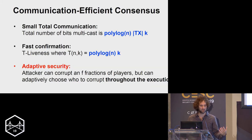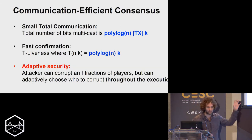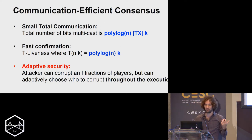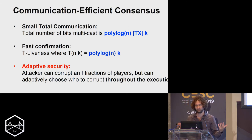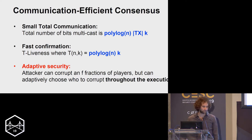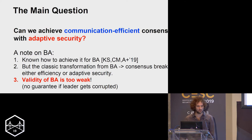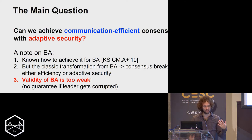So what we'd like is a protocol that satisfies communication efficiency and also has adaptive security — meaning the attacker can corrupt players throughout execution, including after a committee has been selected. The question is: can we achieve communication-efficient consensus with adaptive security?